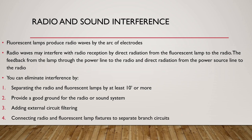Radio and sound interference: fluorescent lamps produce radio waves by the arc of electrodes. Radio waves may interfere with radio reception by direct radiation from the fluorescent lamp to the radio, feedback from the lamp through the power line to the radio, and direct radiation from the power source line. You can eliminate the interference by separating the radio and fluorescent lamps by at least 10 feet or more, providing a good ground for the radio or sound system, adding external circuit filtering, and connecting radio and fluorescent lamp fixtures to separate branch circuits.